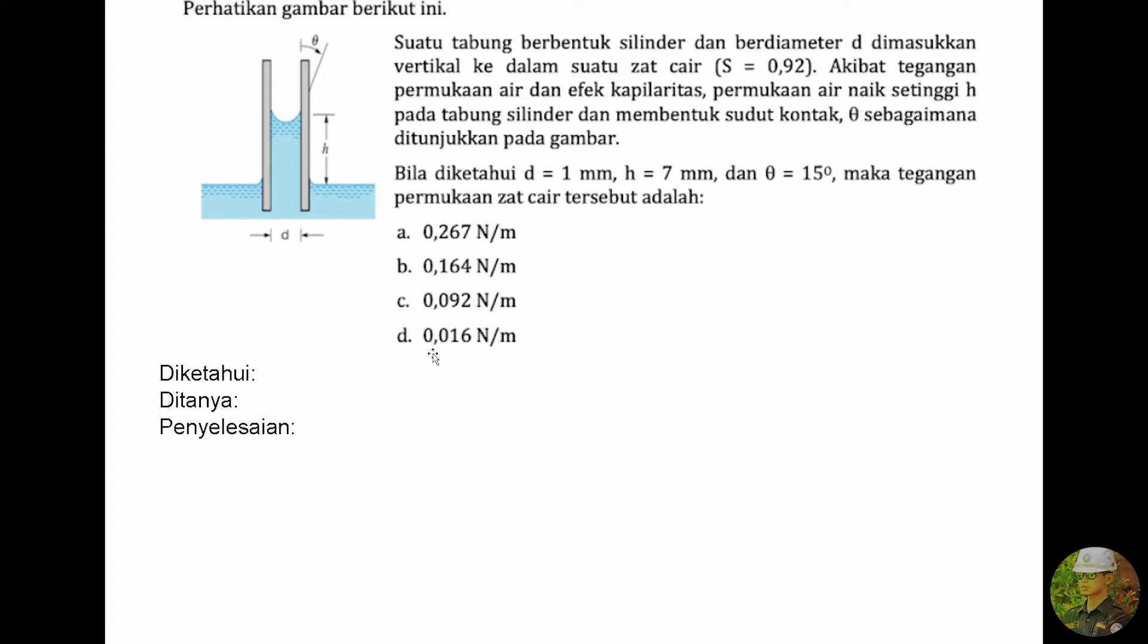Soal ini tentang kapilaritas. Perhatikan gambar berikut ini. Suatu tabung berbentuk silinder dan berdiameter D dimasukkan vertikal ke dalam suatu zat cair dengan S sebesar 0,92. Akibat tegangan permukaan air dan efek kapilaritas, permukaan air naik setinggi H pada tabung silinder dan membentuk sudut kontak theta sebagaimana ditunjukkan pada gambar. Bila diketahui D sama dengan 1 mm dan H sebesar 7 mm, sudut kontaknya atau theta sebesar 15 derajat. Maka tegangan permukaan zat cair tersebut adalah?